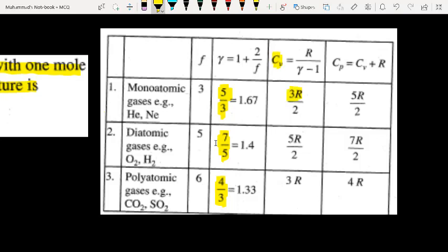CV is 3 by 2, CP is 5 by 2, diatomic is 5 by 2, CP is 7 by 2.